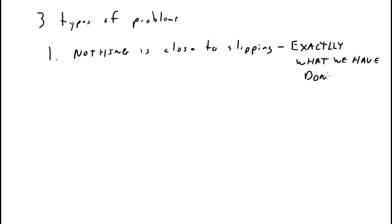There are three types of problems. The first type is nothing is close to slipping. This is exactly what we've done so far in this class. And in fact, when we work these problems, we are not using, do not use, Fs equals mu N. And since we're not going to use Fs equals mu N, we can assume a direction of Fs if we want to.